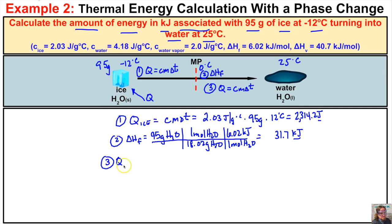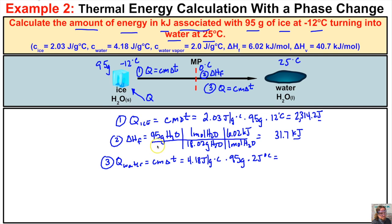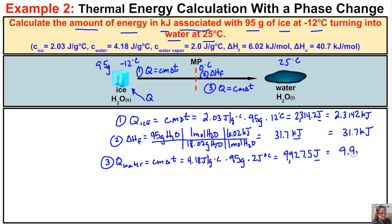In step three, we figure out how much thermal energy the water absorbs as it goes from zero degrees Celsius to 25 degrees Celsius. The specific heat capacity of water is 4.18 joules per gram degrees Celsius, the mass stays at 95 grams, and the change in temperature from zero to 25 is 25 degrees Celsius. Calculating: 4.18 × 95 × 25 = 9,927.5 joules. Before adding, we convert everything to kilojoules: 2,314.2 J → 2.3142 kJ; 31.7 kJ stays; 9,927.5 J → 9.9275 kJ.